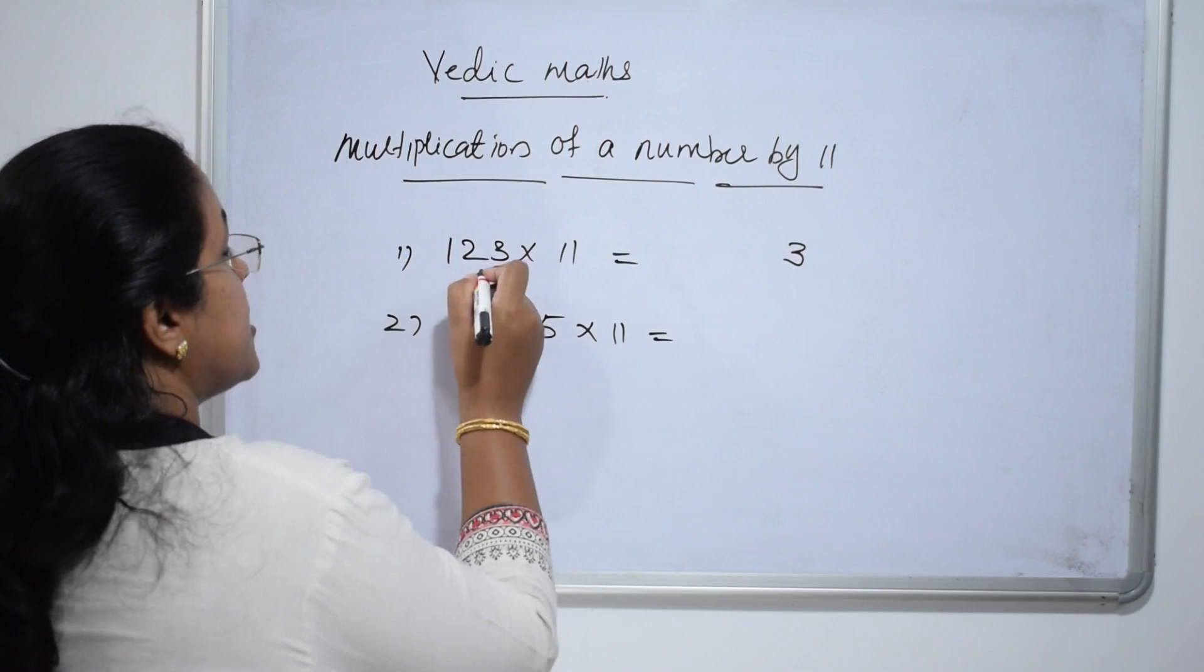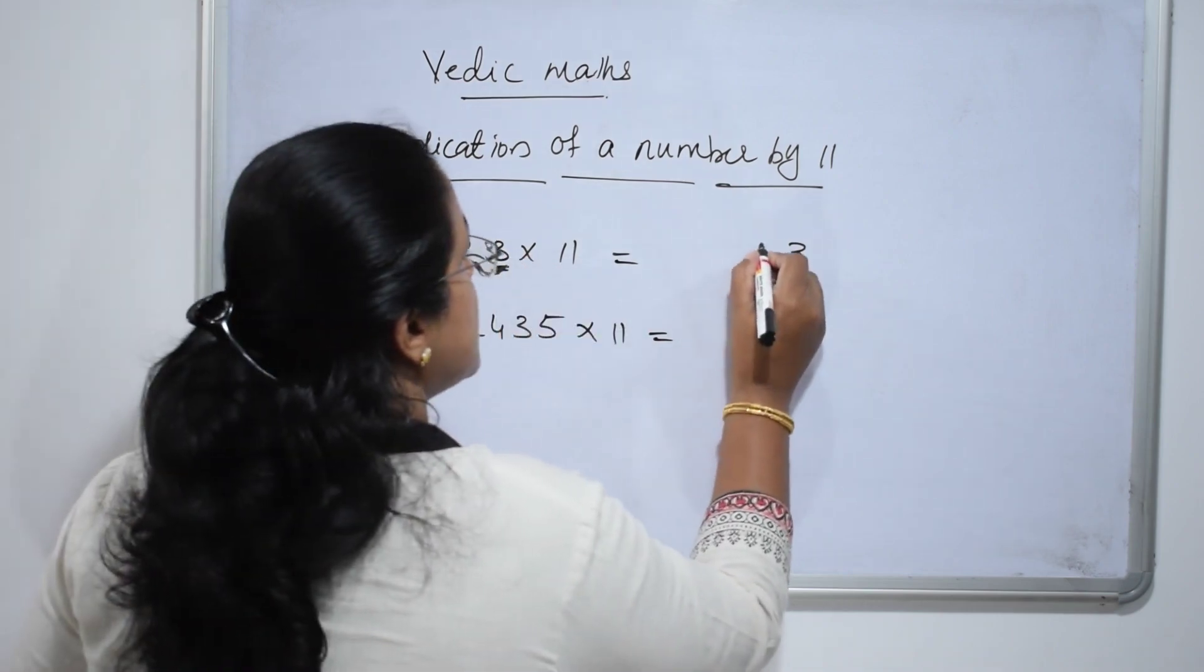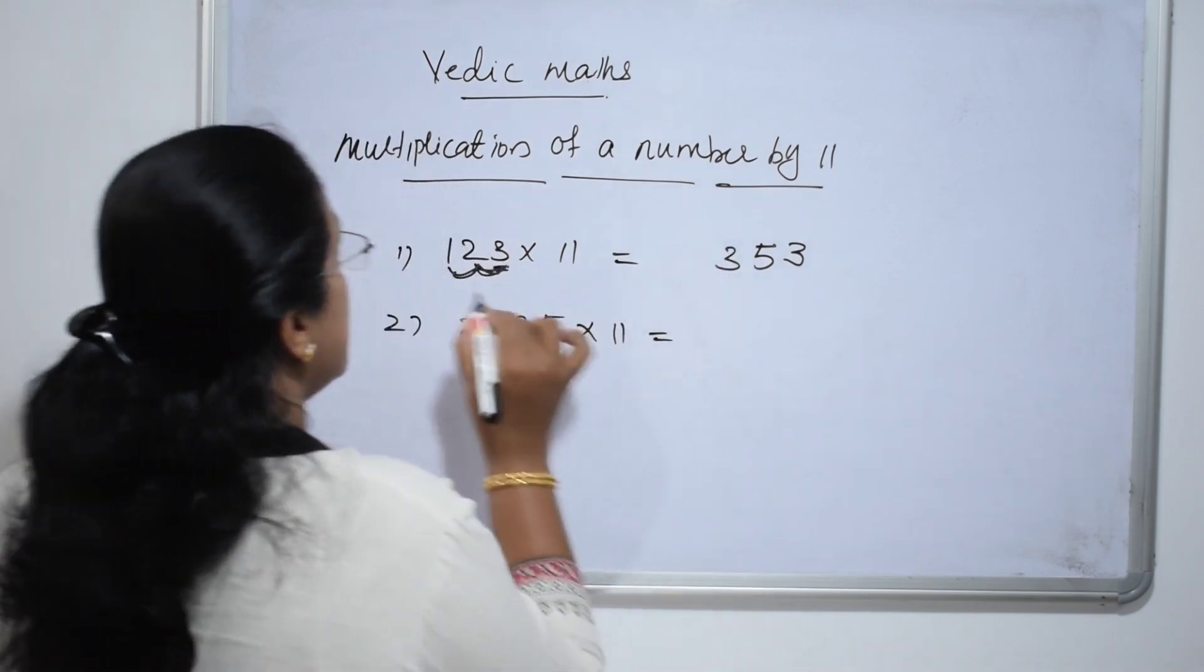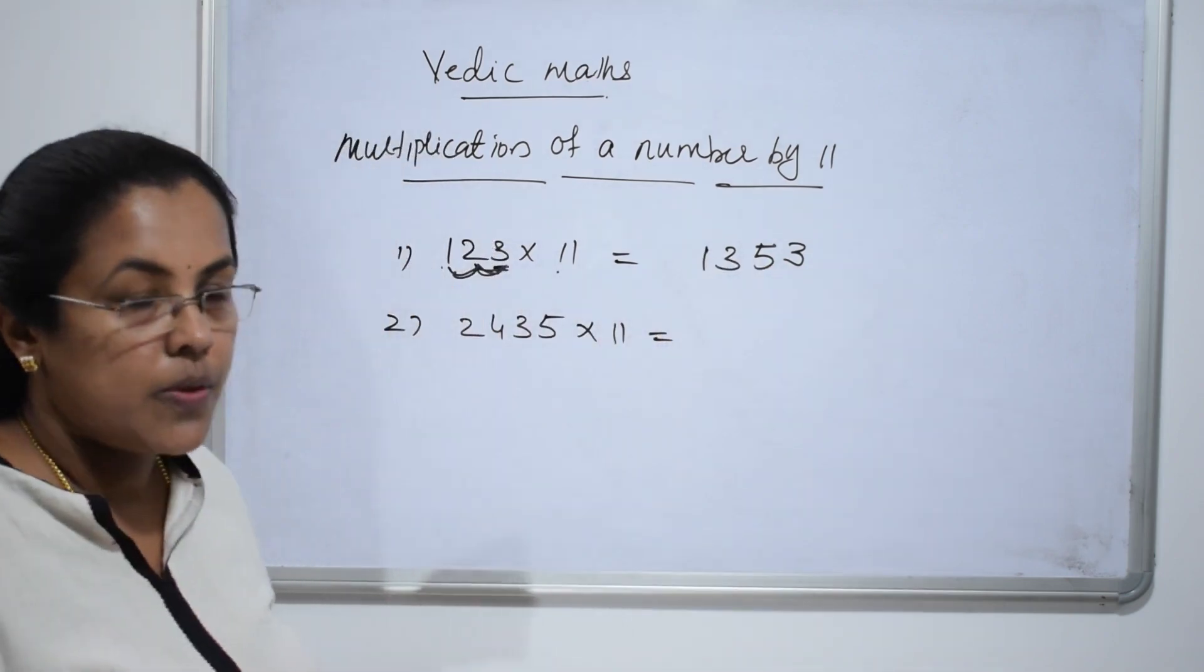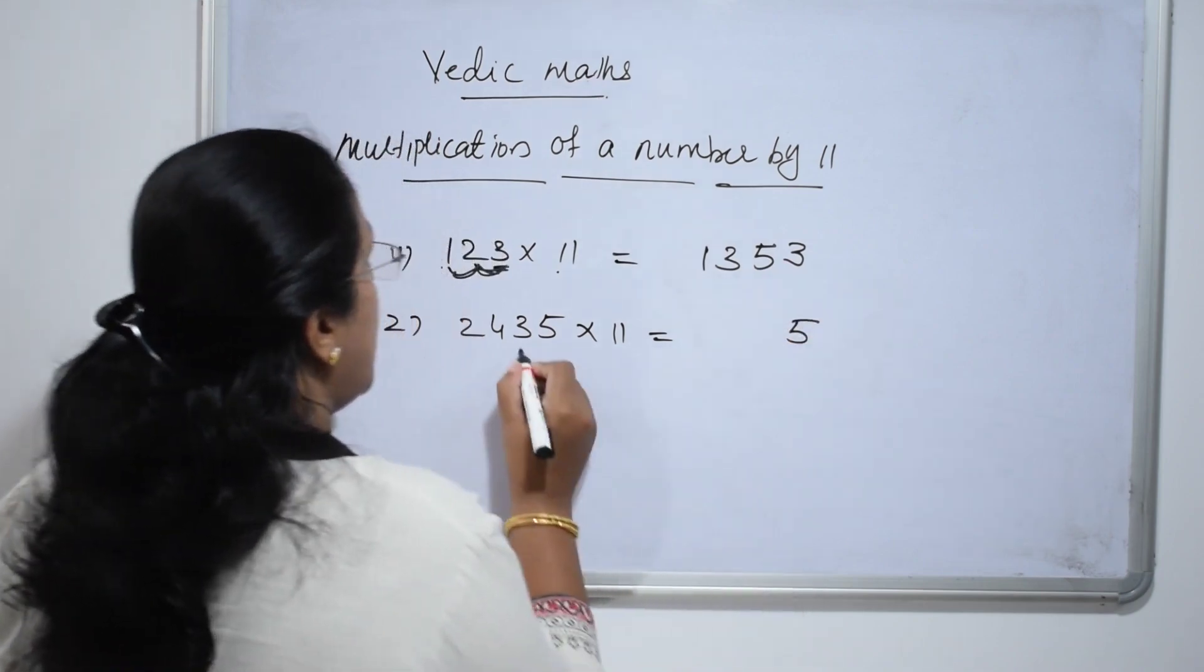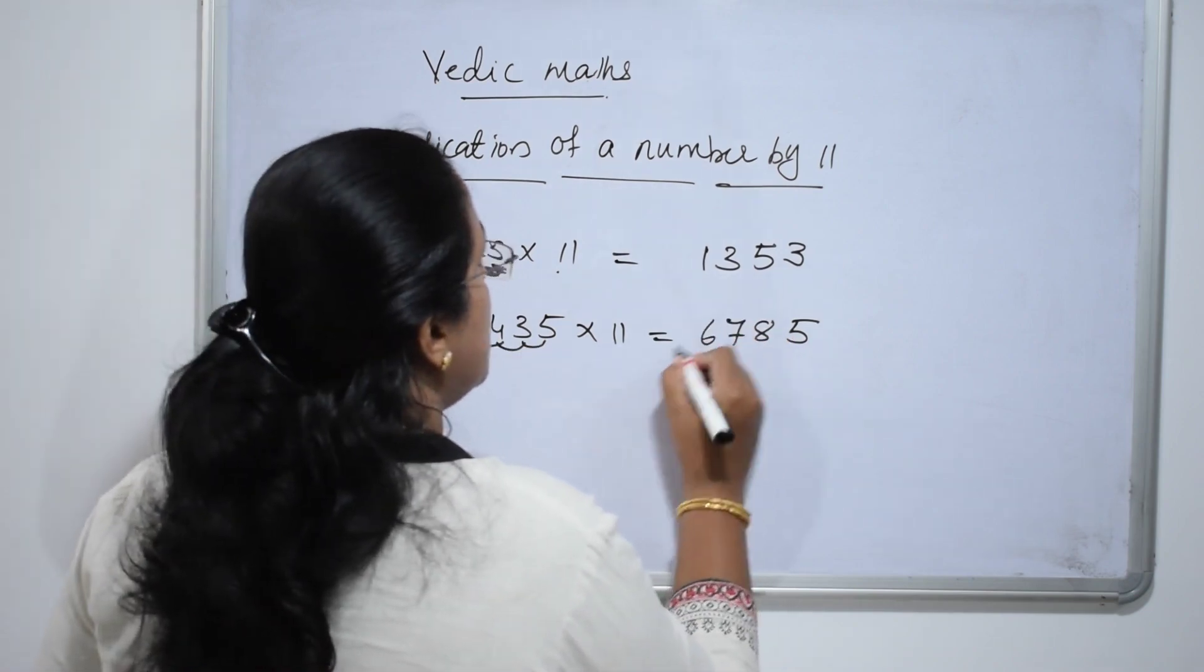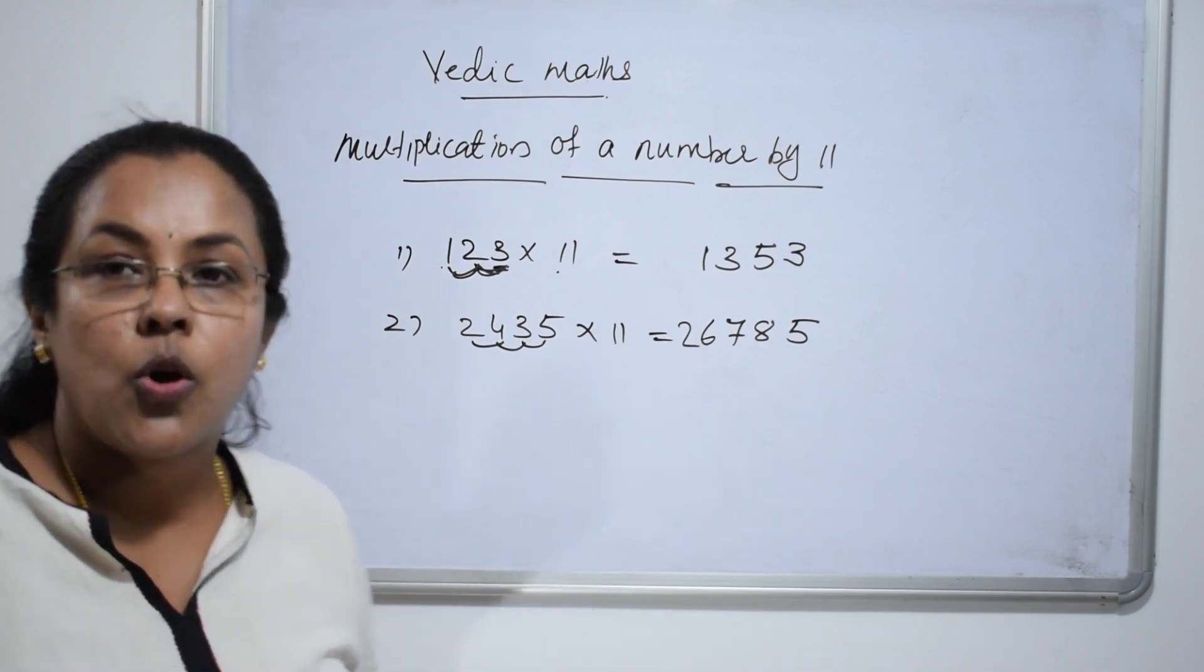For the next digit, add the 2 digits. 2 and 3. 2 plus 3 is 5. Now, next add the 2 digits. 2 and 1. 2 plus 1 is 3. Write 1 as it is. 1 into 1 is 1 itself. One more. 5 into 1 is 5. 5 plus 3, 8. 4 plus 3, 7. 2 plus 4, 6. 2 into 1 is 2 itself. Hope you understand.